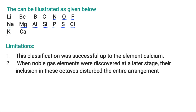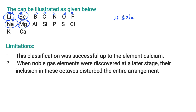Continuing the sequence: silicon, phosphorus, sulphur, chlorine, potassium, calcium. Lithium is the first element, and sodium is the eighth element after lithium — these two were found to have the same properties. Similarly, beryllium and magnesium have similar properties. So Newlands concluded that when elements are arranged in increasing order of atomic masses, every eighth element exhibits similar properties.